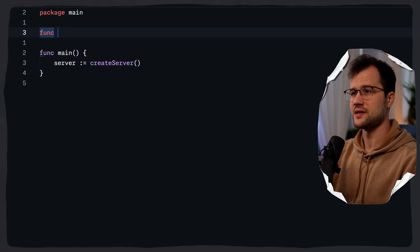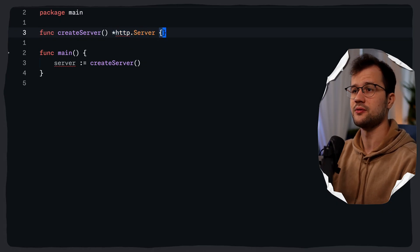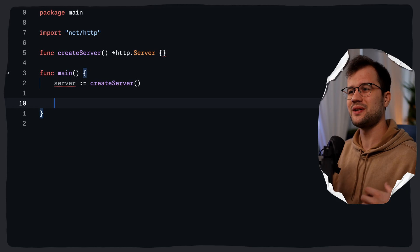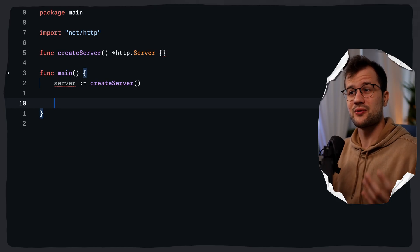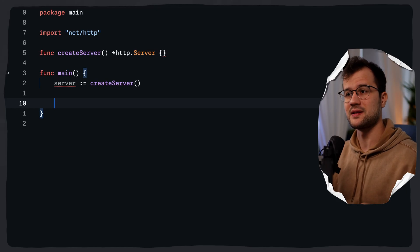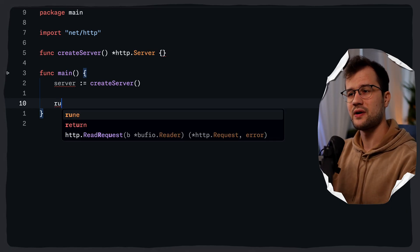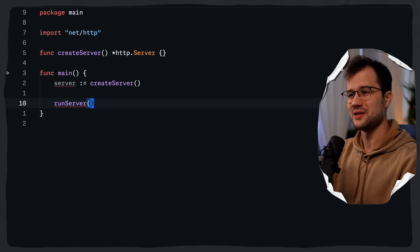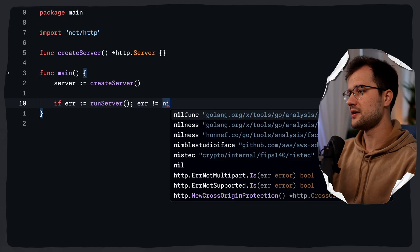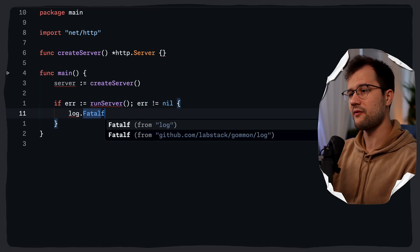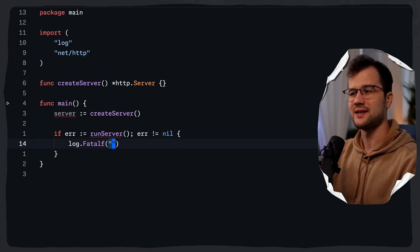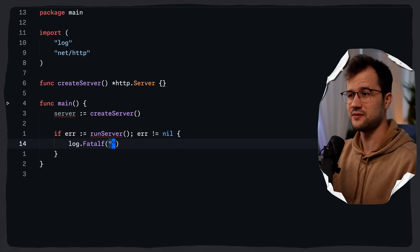This create server function returns an HTTP server — a pointer to an HTTP server. Then we also need the run server function. This create server function just configures the server behind the scenes and sets up the server struct in general. This run server function will return an error, so we can say if error is not equal to nil, we will just fatal f here. Feel free to use proper error handling, but I'm just going to fatal f this if something goes wrong.